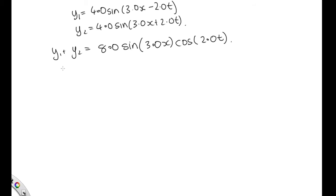Now we're asked: at x equals 2.3 centimeters, what is A? The cosine function oscillates between 1 and minus 1 as time progresses, so it doesn't contribute to our amplitude. Our amplitude equals 8.0 sine of 3.0x.